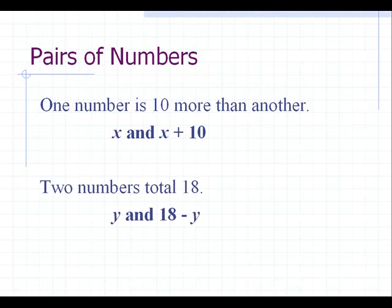Also, if the verbal phrase says, two numbers total 18, then one number could be supposed to be equal to y, and other number would be equal to 18 minus y.